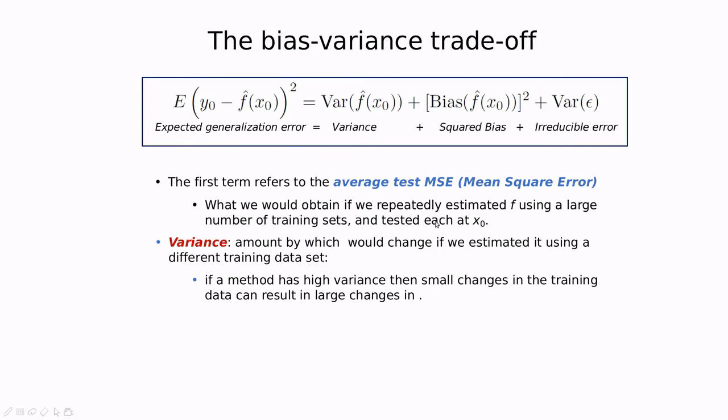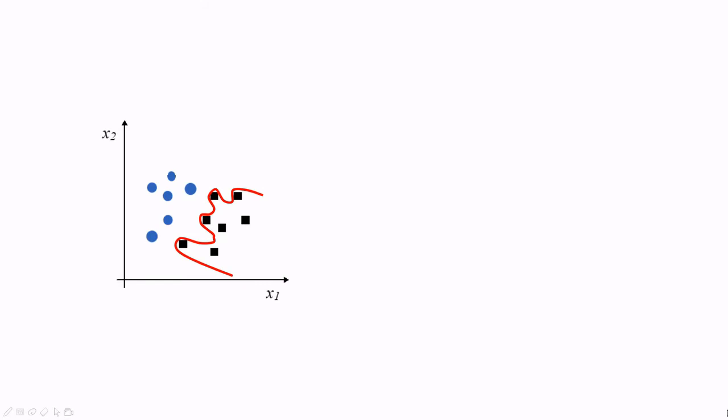The first part is called the variance, and it's related to the ability of our model to generalize. If a method has high variance, then small changes in the training data can result in large changes. For instance, if we replace a point in the training phase, then the boundary is going to change a lot. There's a lot of variability in the classification training.